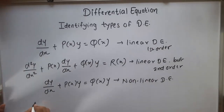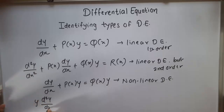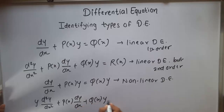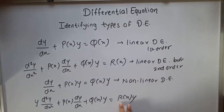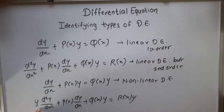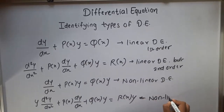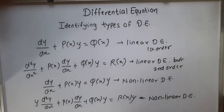Again, if we multiply by y, that forms y times d²y/dx² plus p(x) dy/dx plus q(x)y equal to r(x) times y. Here we also have both x and y present, and here we have a multiplication of two y variables — y and y. So that differential equation is also called a non-linear differential equation. That will help you to identify the differential equation.